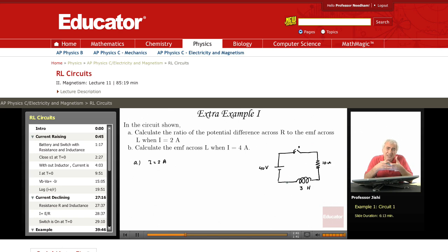When you close the switch at that instant the current is 0, then the current starts rising. It doesn't rise instantly to E over R because of the presence of the inductor.